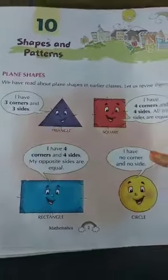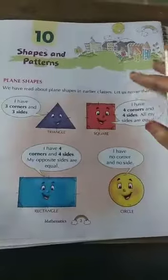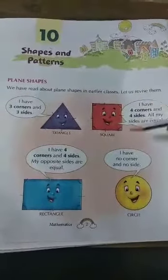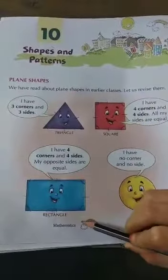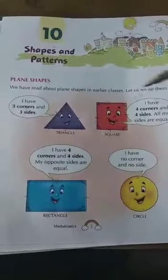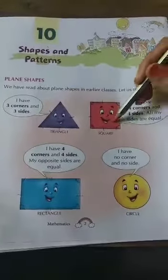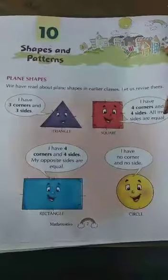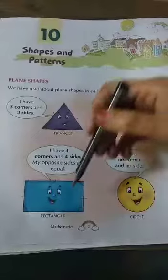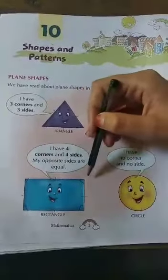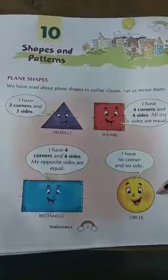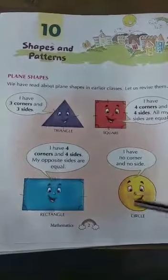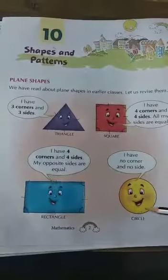Now, there is one difference between a square and a rectangle. In a square, all sides are equal, but in a rectangle, only opposite sides are equal.